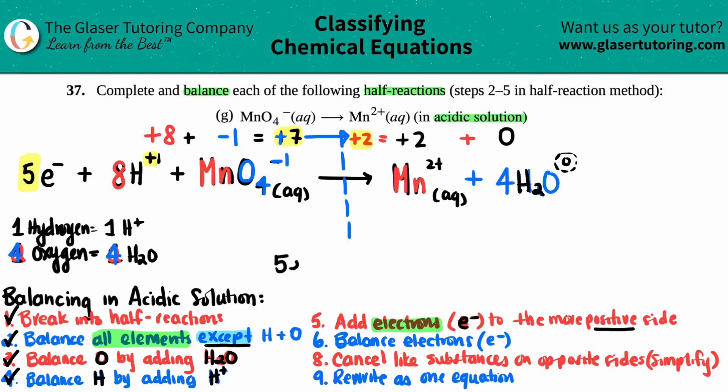So your final answer would be five E negative plus eight H plus, plus your MnO4 minus, and that's aqueous, yields Mn2+ aqueous, and then plus four H2O. And that's it.